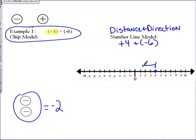So 1, 2, 3, 4 gets us back to 0, 5, 6. Our end result or our sum will be negative 2.